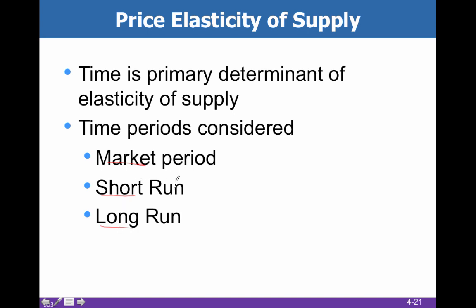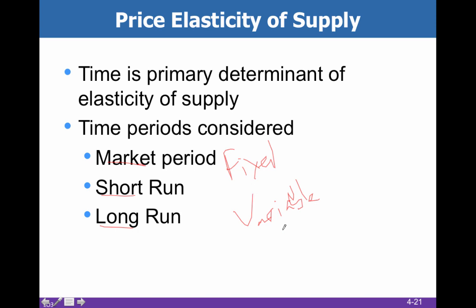When we talk about time, it's not about physical time — days, weeks, months, years. What it's about is fixed and variable factors of production. A fixed production component is something that can't be changed, and a variable production component is something that can.